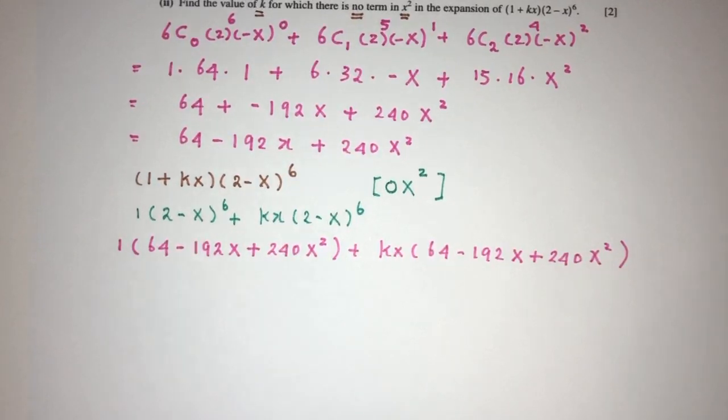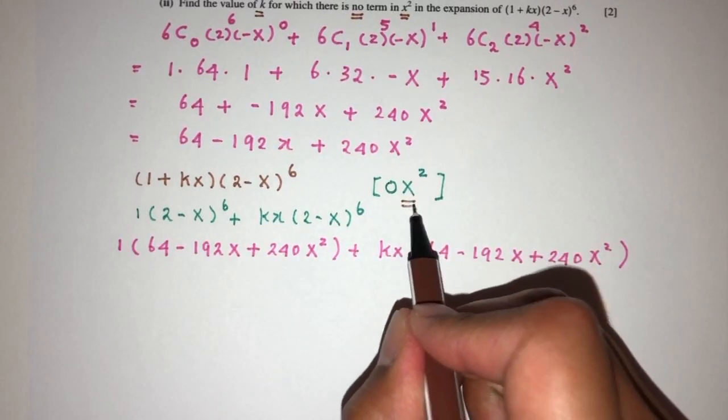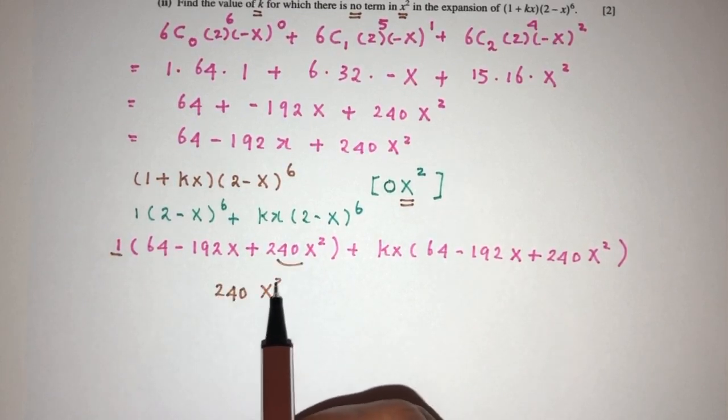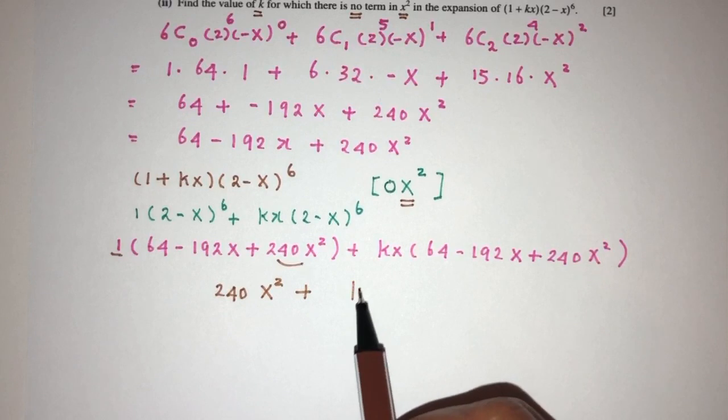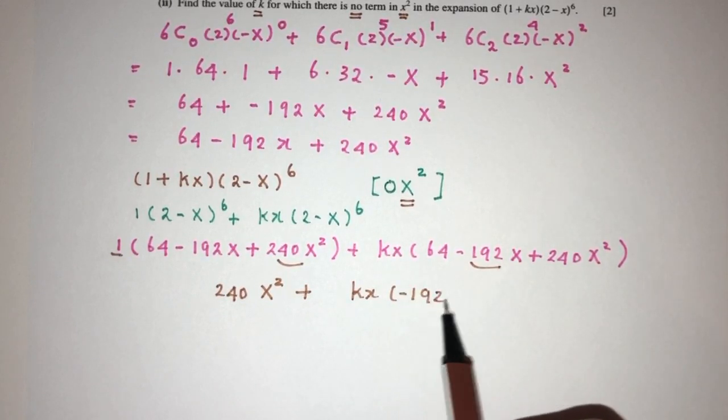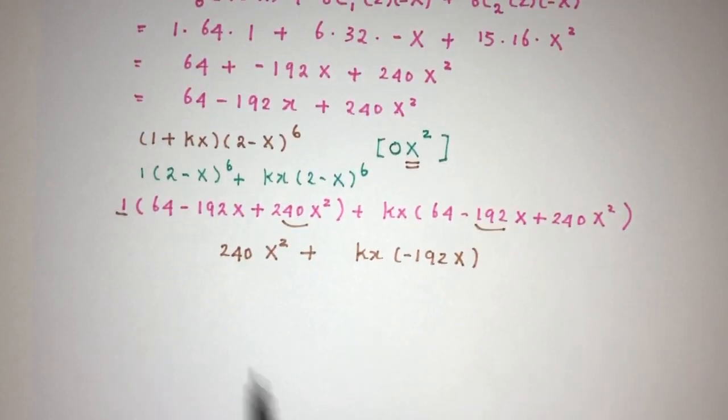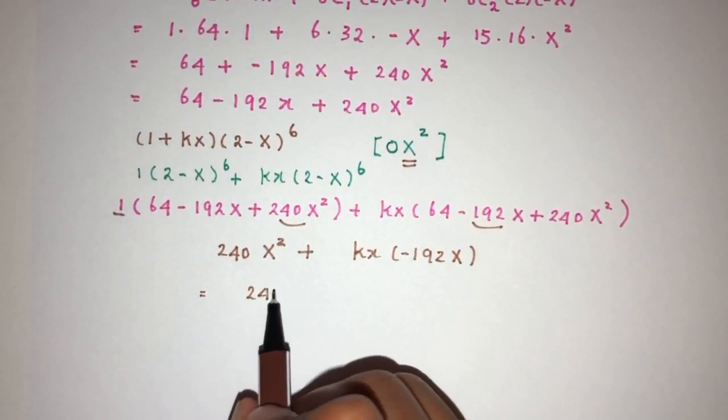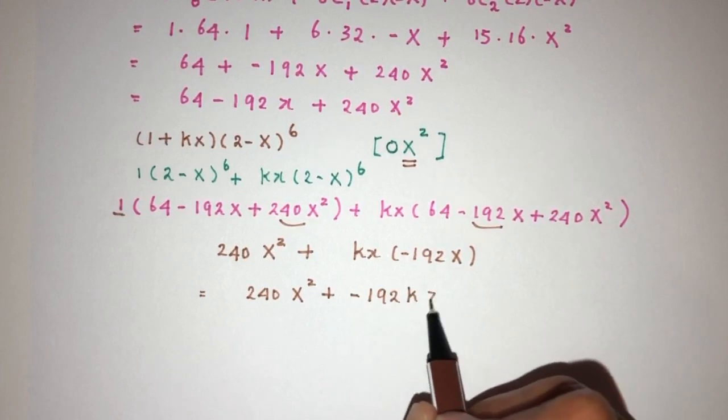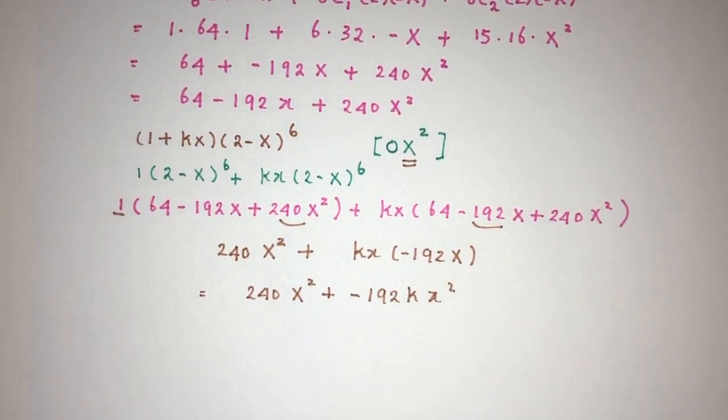Now here in this question, we only care about the term in x squared. So 1 times this one, 240x squared plus kx multiplied by this one, minus 192x because we only care about x squared. This will give you 240x squared plus minus 192k x squared. We know if you factorize, you will have 240 minus 192k. That will be x squared.